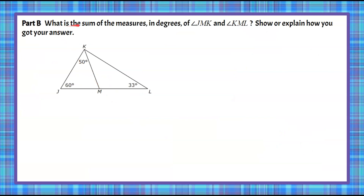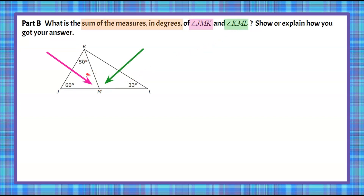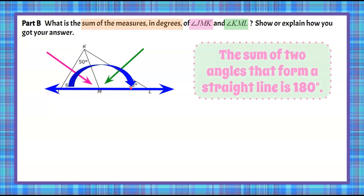Here's Part B. You're asked: what is the sum of the measures in degrees of angle JMK and angle KML? Show or explain how you got your answer. Welcome back. We are now being asked the sum of JMK and KML. If we look at our triangle, we can see that these two angles together form a straight line. The sum of two angles that form a straight line is 180 degrees, so this angle plus this angle equals 180 degrees.